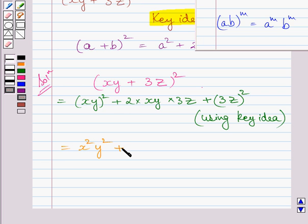This plus sign is as it is. 2 multiplied by 3 is 6. And these variable terms are xy, z.